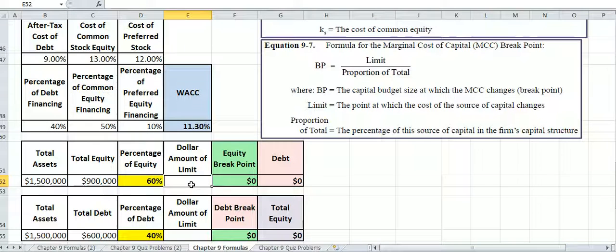So equity is $100,000, and our equity is $500,000.